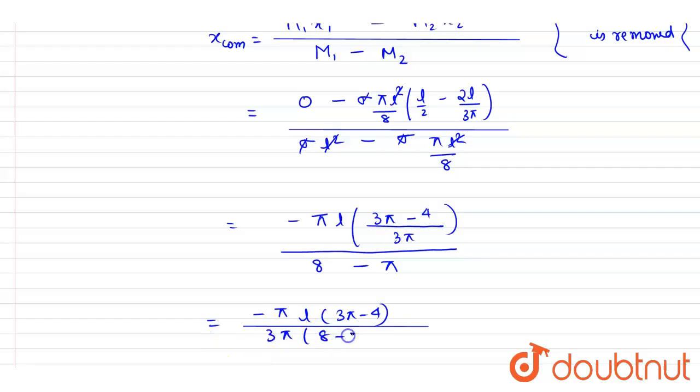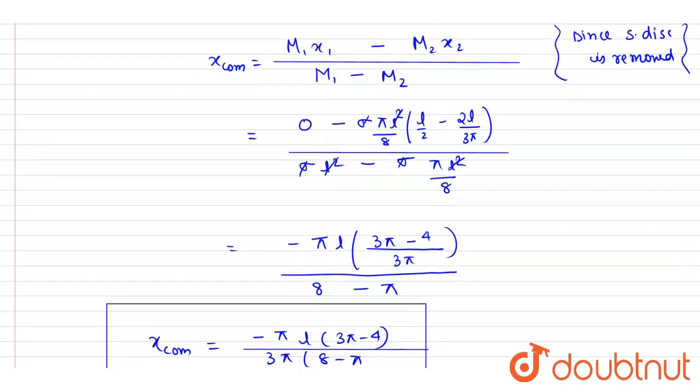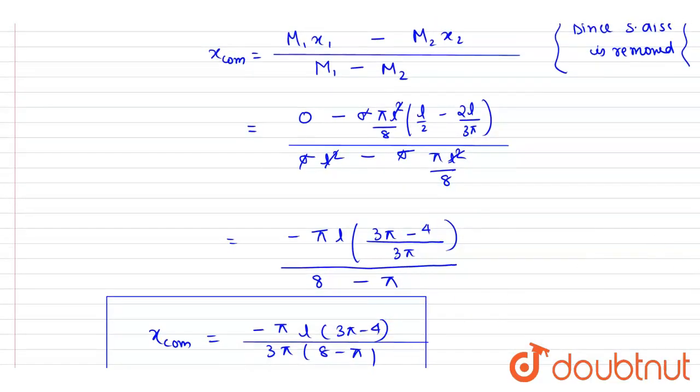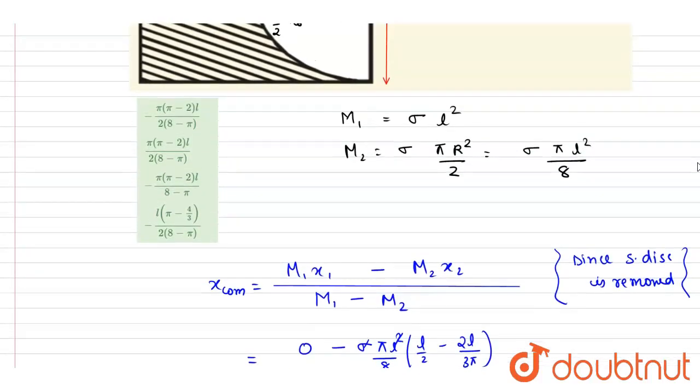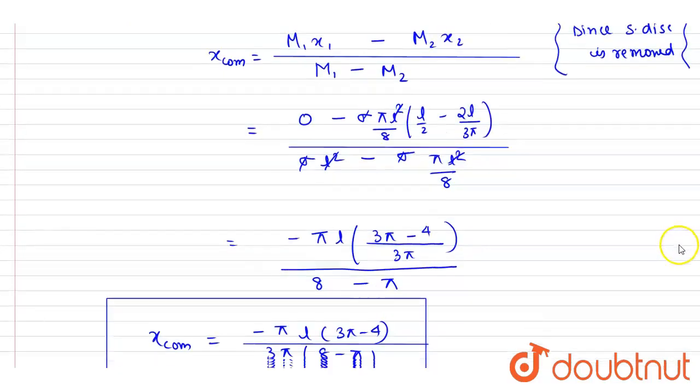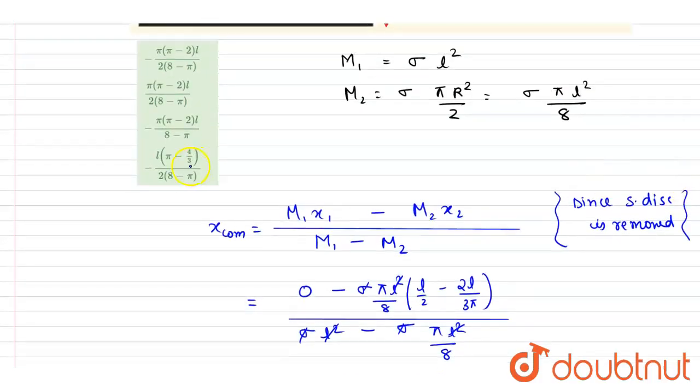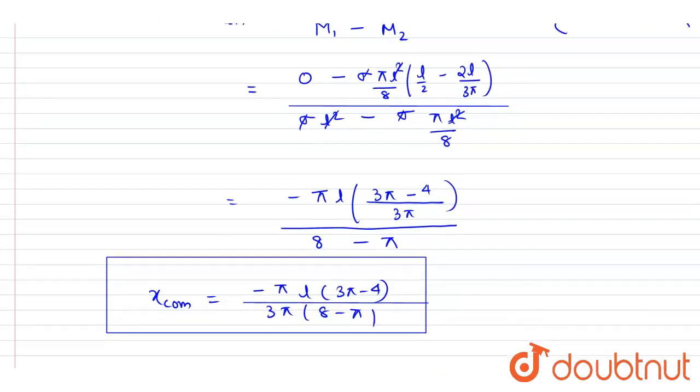3π, 8 minus π, and this is the answer of this question. Now you can check for the option: πl, 3π minus 4 upon 3π into 8 minus π. So if you see here πl, 3π minus 4.